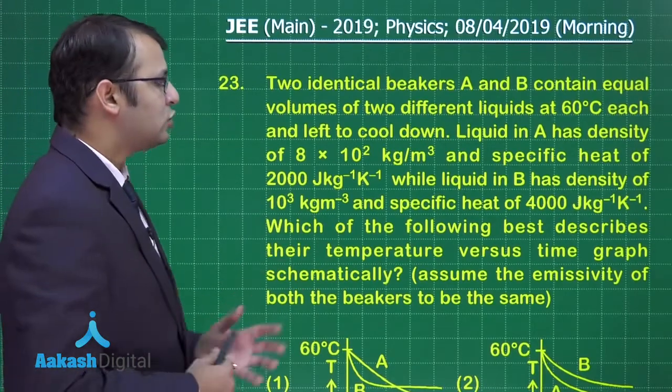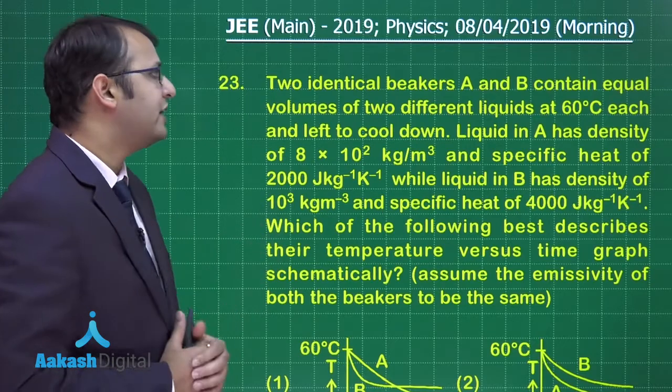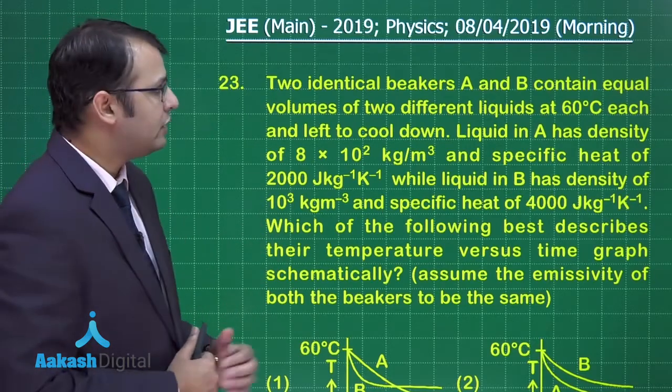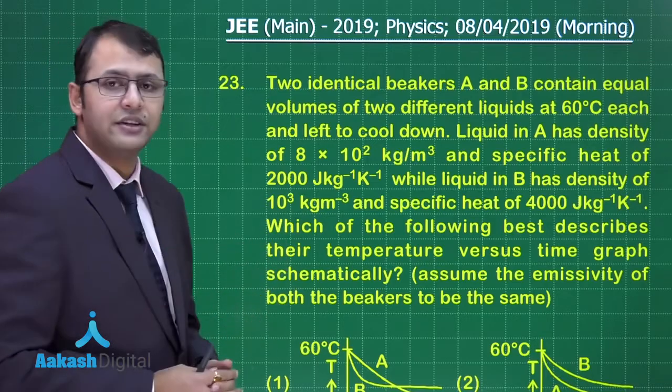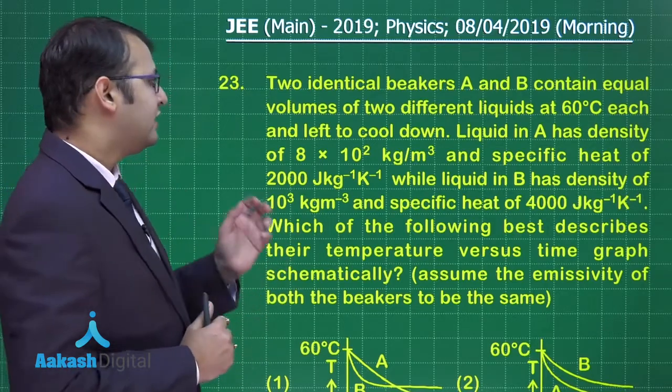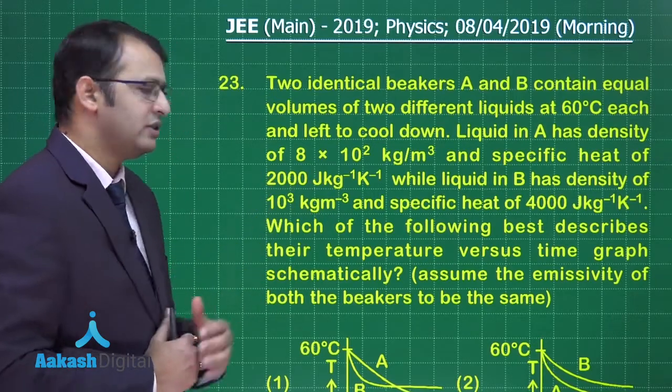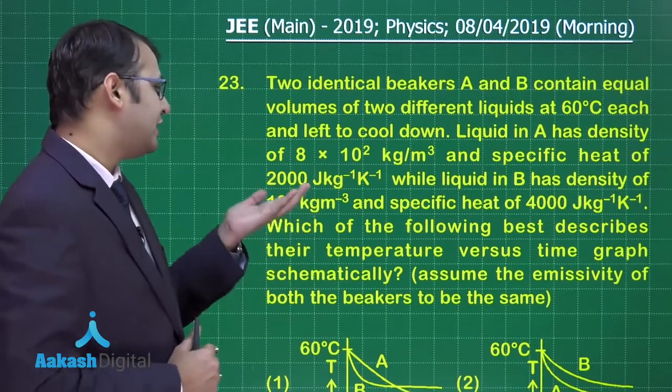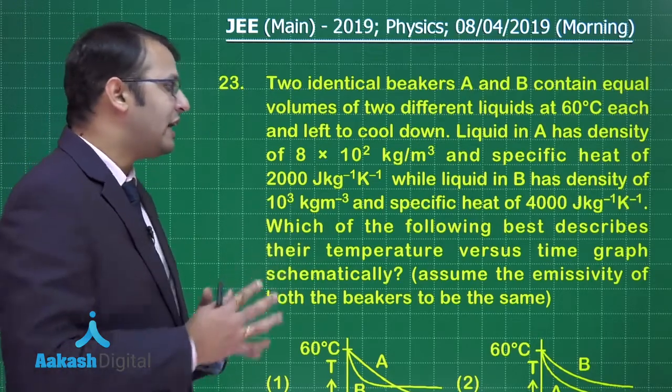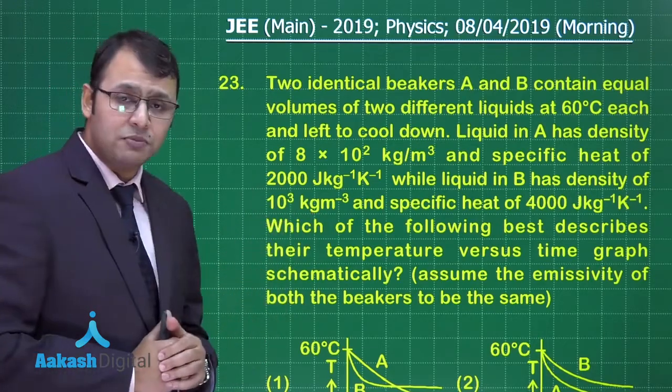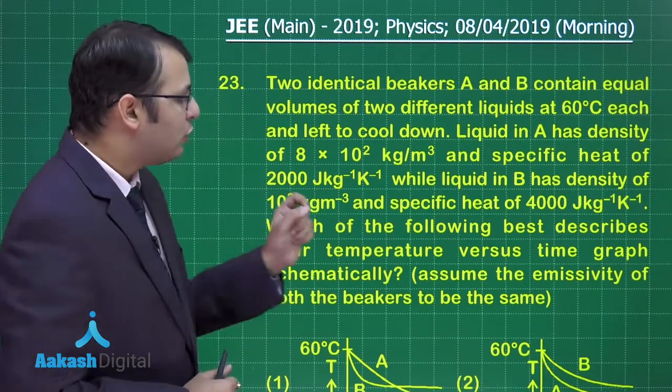Question number 23 belongs to heat and thermodynamics. Here two identical beakers A and B contain equal volumes of two different liquids at 60 degrees centigrade each and are left to cool down. Liquid A has density of 8×10² kg/m³ and specific heat of 2000 J/kg/K, while liquid B has density of 10³ kg/m³ and specific heat of 4000 J/kg/K.